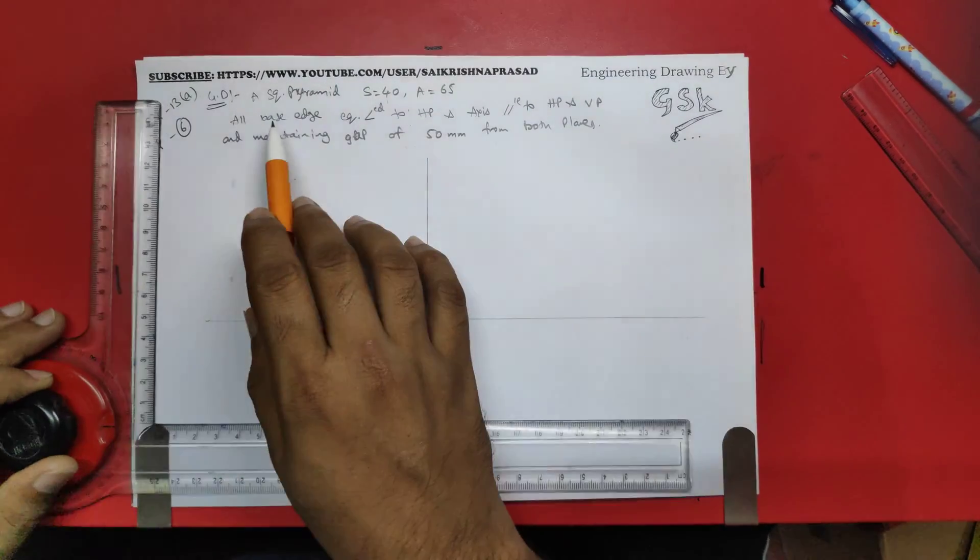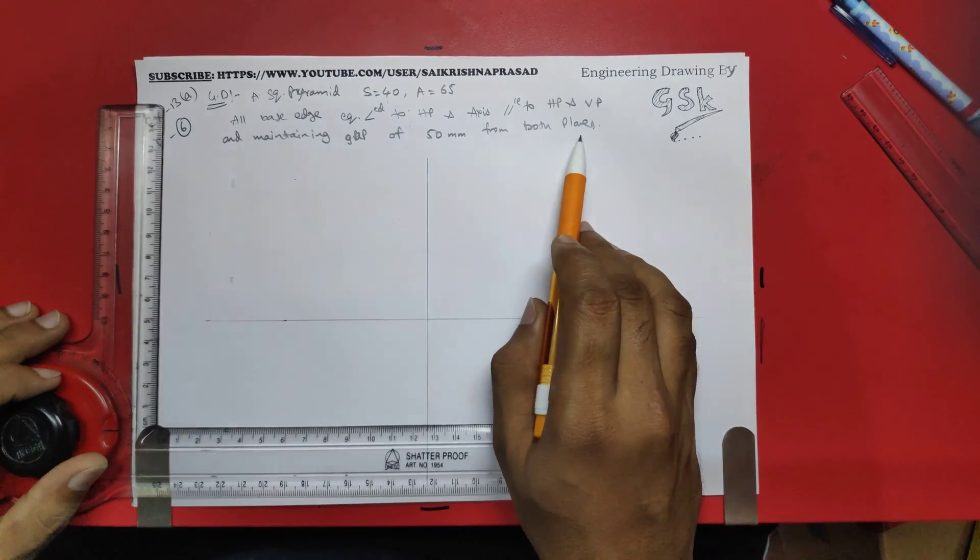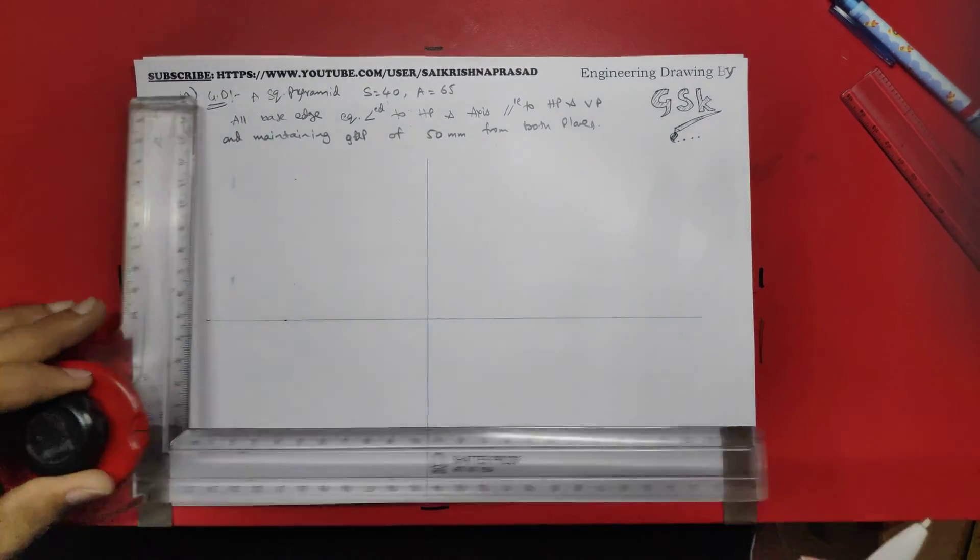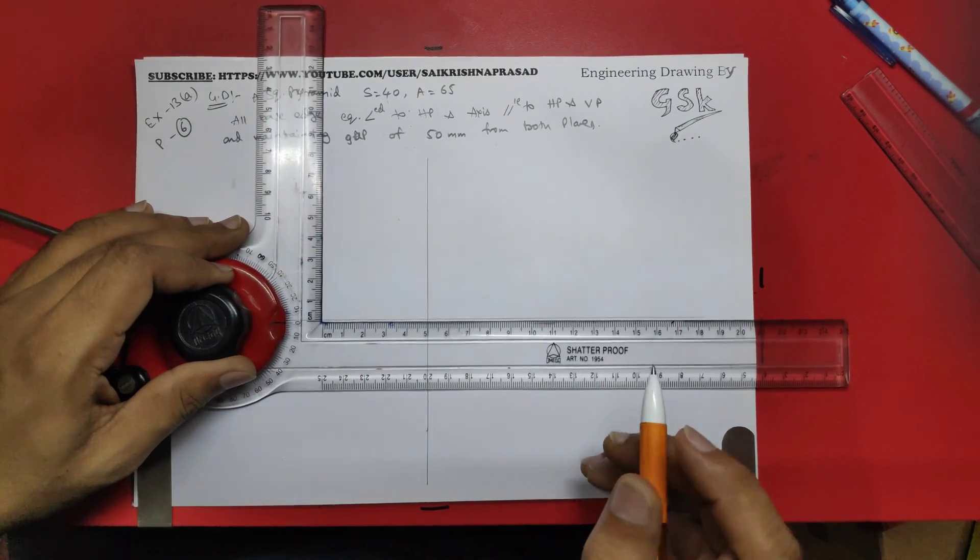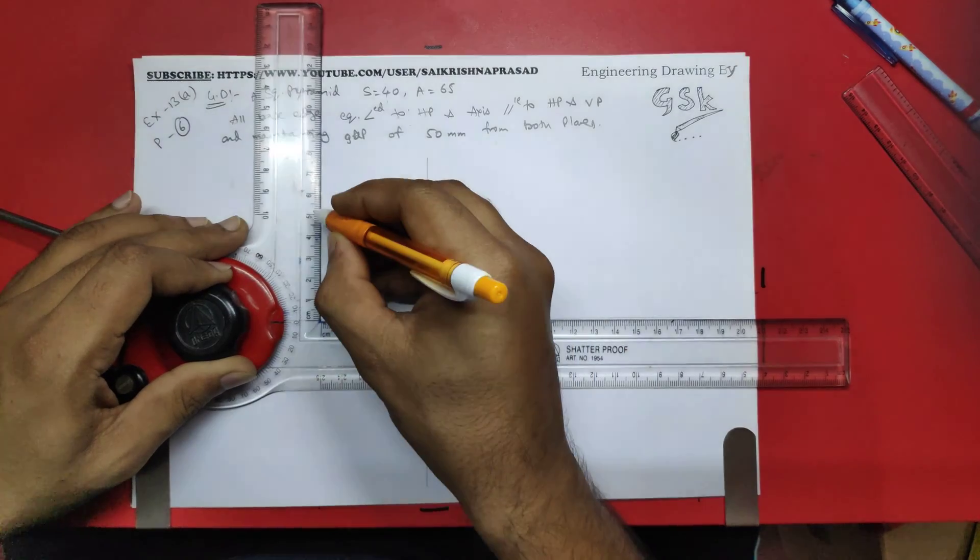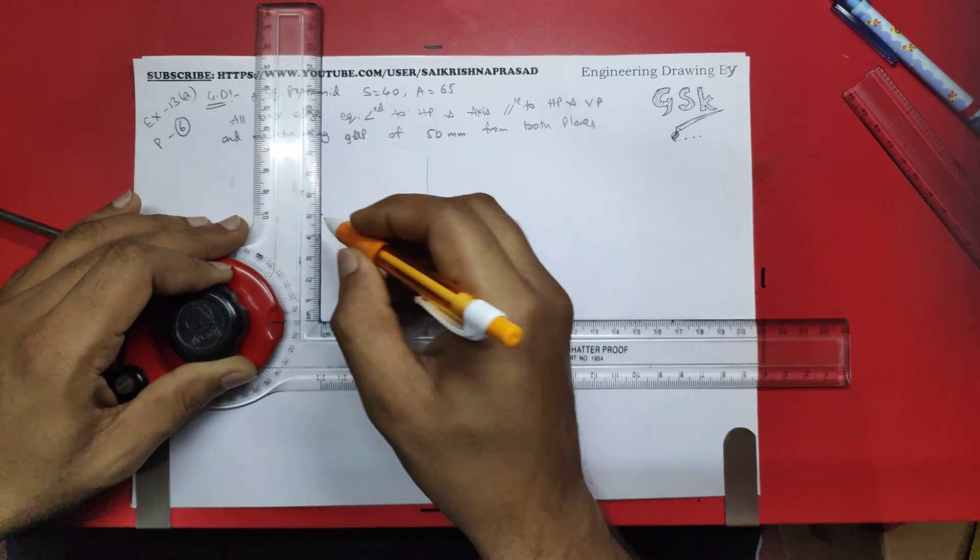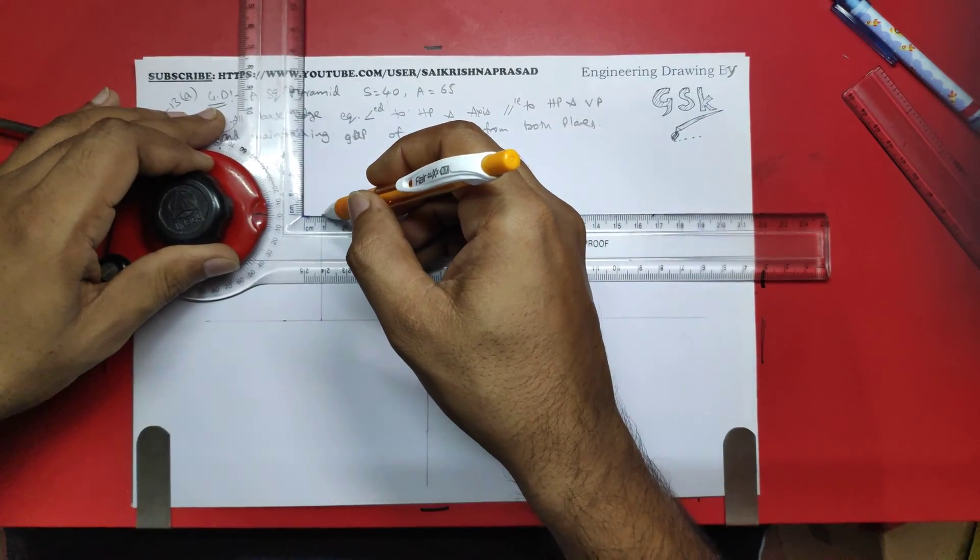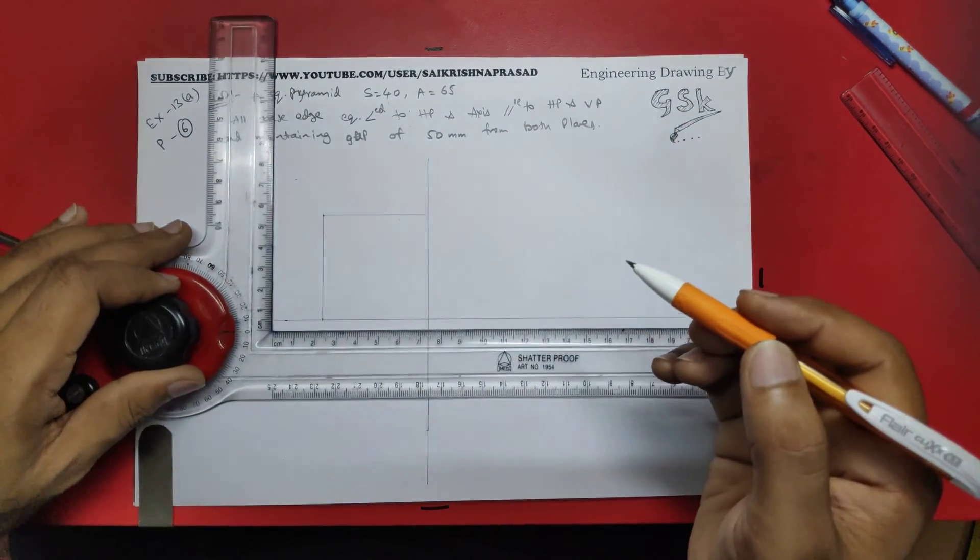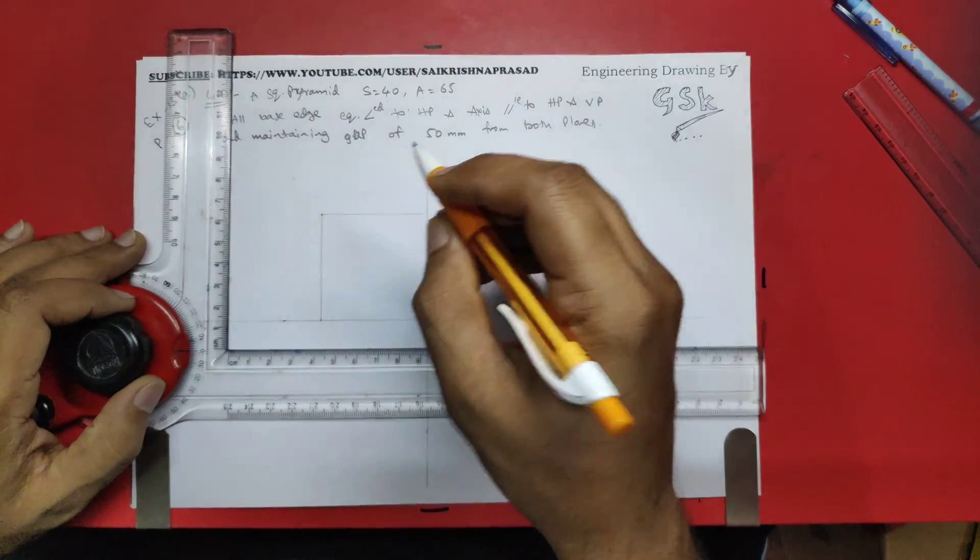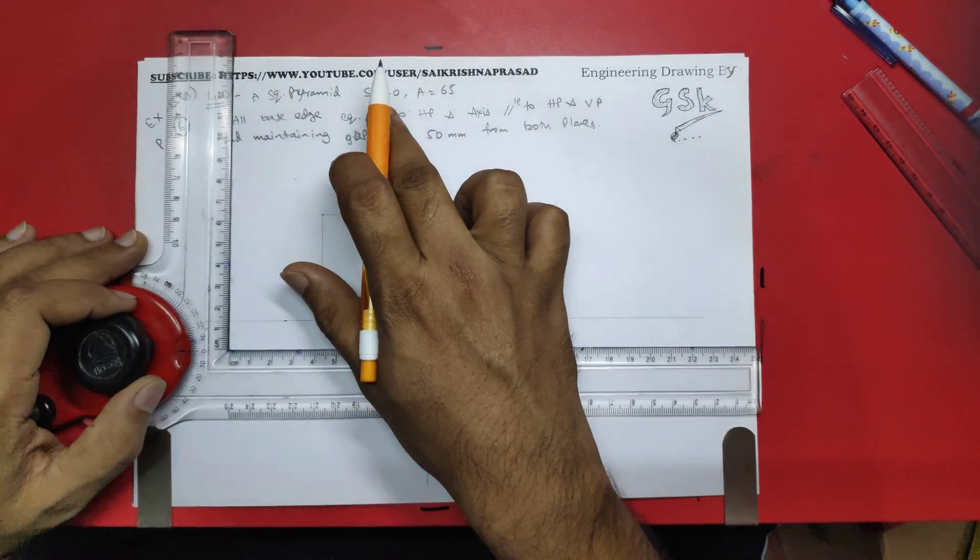So for getting the 50mm from both planes, I will be starting 50mm from this and 50mm from this. 50mm and 50mm. So this is the center point of creating the square pyramid of side 40.